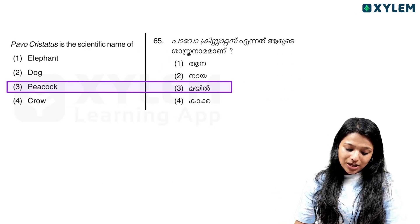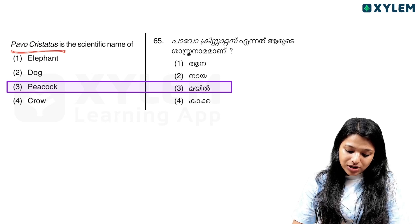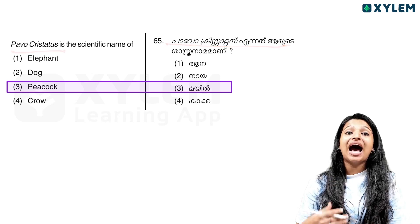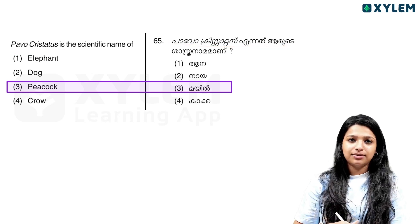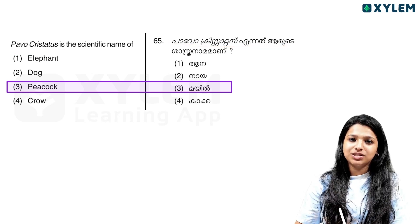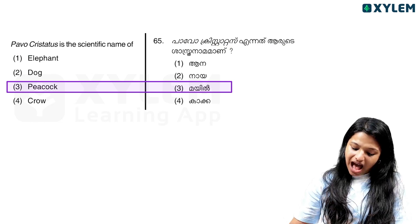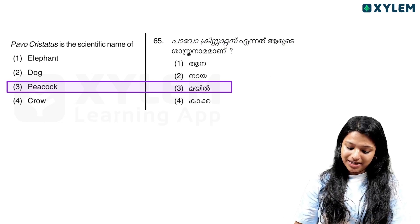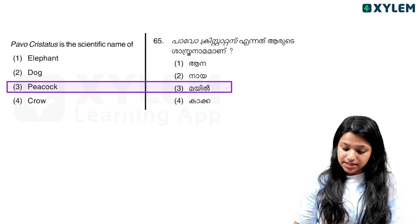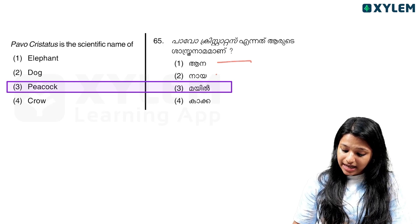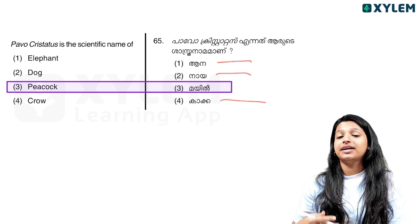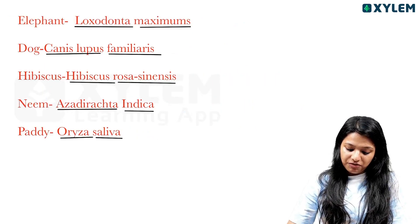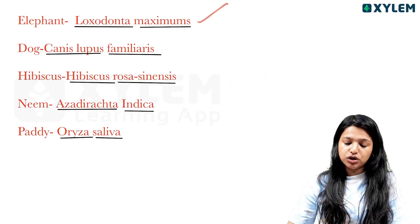Now we will learn binomial nomenclature examples. The elephant — its scientific name is Loxodonta maximus.